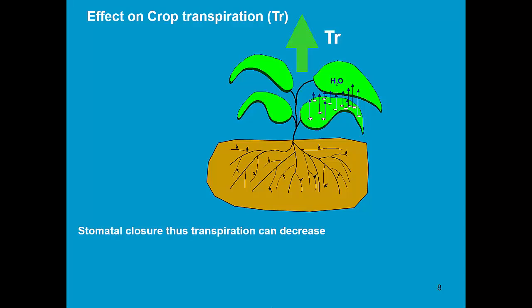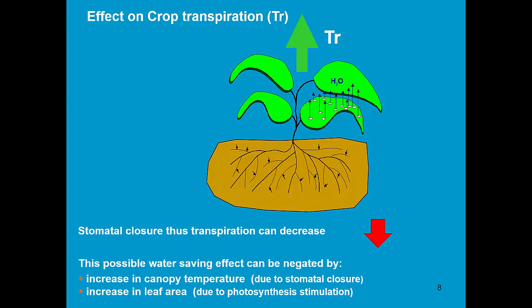The first effect of that higher CO2 is on crop transpiration. Due to the higher CO2 concentration, we notice a certain closure of the stomata, which decreases transpiration. However, this possible water saving is likely to be negated by an increase in canopy temperature. Due to stomatal closure, we have less transpiration and hence a higher temperature around the leaves.